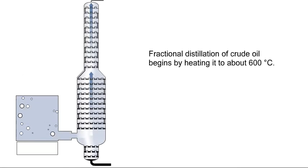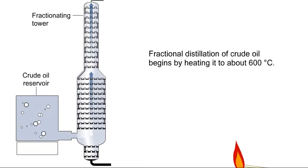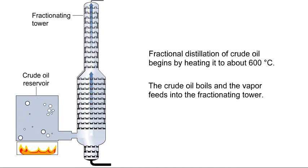Fractional distillation of crude oil begins by heating it to about 600 degrees Celsius. The crude oil boils, and the vapor feeds into the fractionating tower.